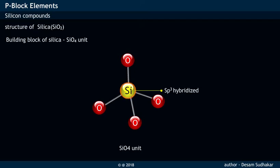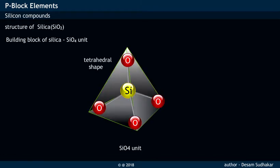Each silicon atom in SiO4 unit is attached to four adjacent oxygen atoms in a tetrahedral fashion and has a bond angle of 109 degrees.